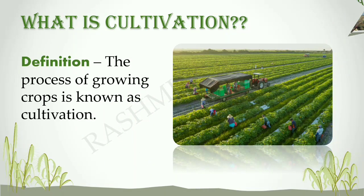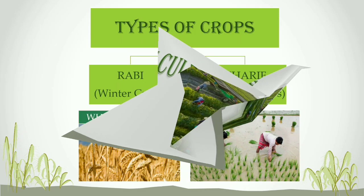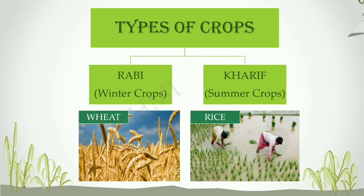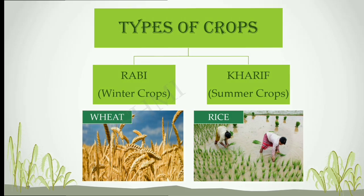The process of growing a crop is known as cultivation. Different kinds of crops grow in different seasons. The crops that grow in the summer season are called Kharif crops, whereas the crops that grow in the winter season are called Rabi crops.